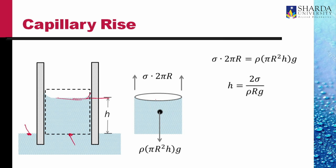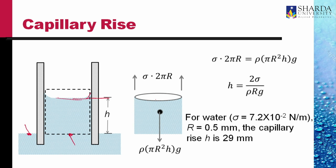Let us estimate this capillary rise for water in a capillary of diameter 1 millimeter, that is radius 0.5 millimeter. Plugging in the values, the capillary rise h is about 29 millimeters — almost 30 mm, or nearly 3 centimeters — in a tube with a bore of 1 millimeter. An interesting phenomenon.